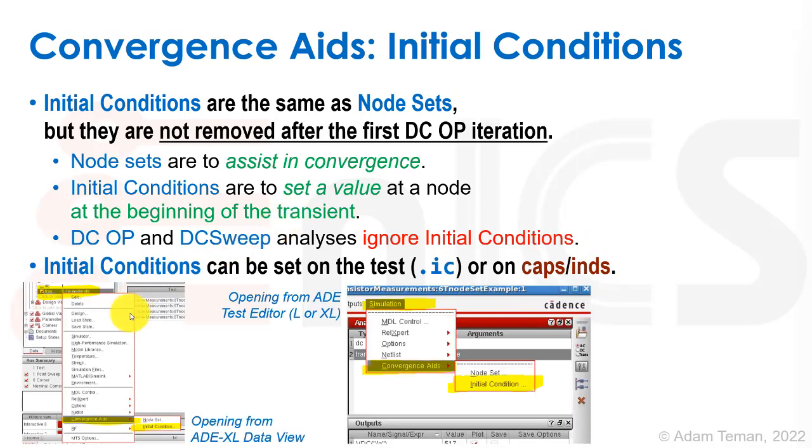We can put a dot IC on any node inside the test, or we can put a voltage on a capacitor as an initial condition, or on an inductor as an initial current. The way to do it in the test, other than writing dot IC in our textual netlist description, we can right click and go to convergence aids, initial condition, or from the AD test editor, we can hit simulation, convergence aids, initial condition. Those are the two ways to do it in AD from the UI.